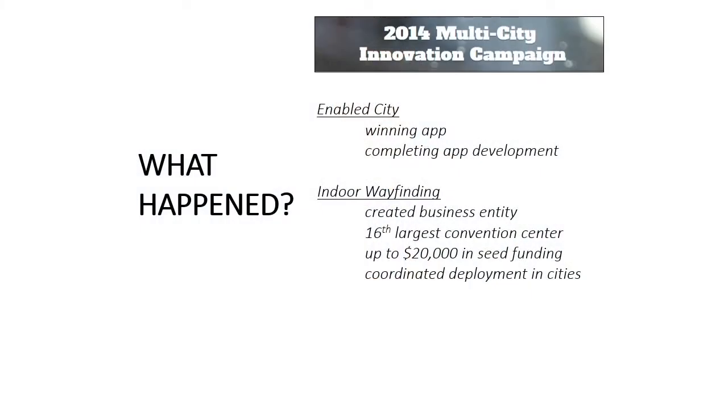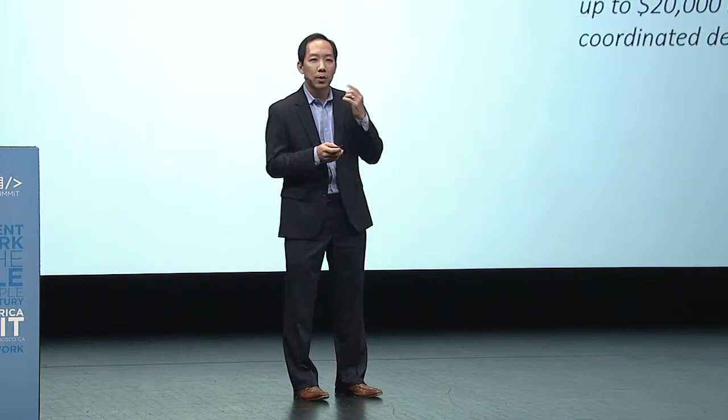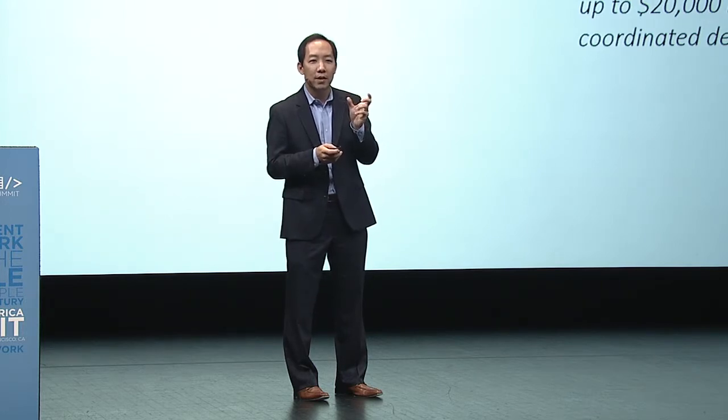Three out of the six finalists are now moving forward. There was an ADA-focused app called Enabled City, built on the Yelp platform, moving forward with new technologies — it was a winning app, but one lesson learned was that the technology didn't fit, with a plus-or-minus five-inch error for an ADA app, which was a deal-breaker. So we now have an indoor wayfinding app using beacons rolling out in one company in the 16th largest convention center in Nashville.